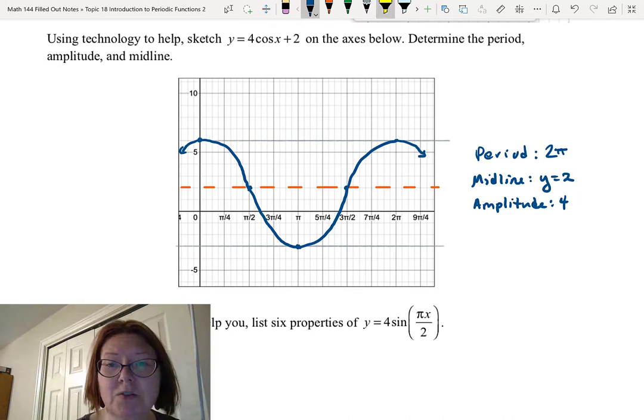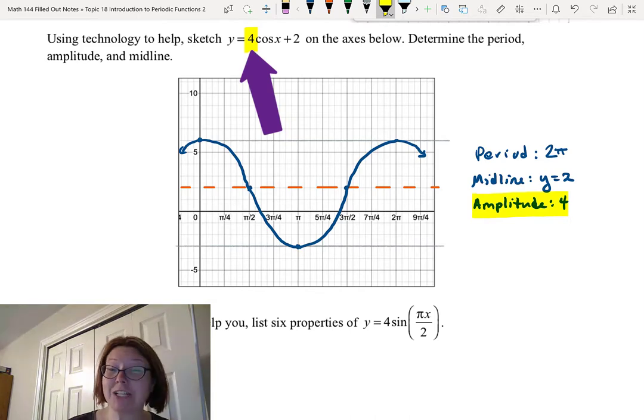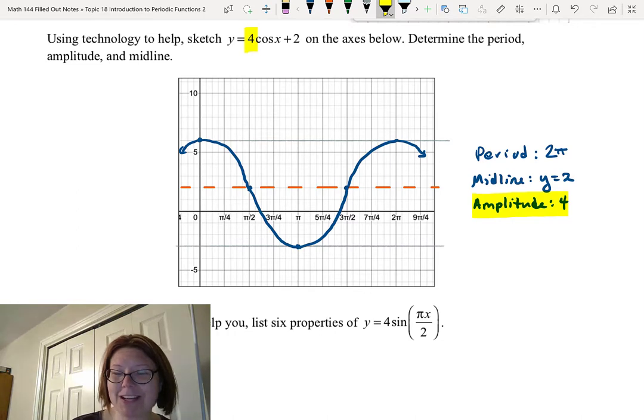And you might have started to notice a trend here. You can actually read off the amplitude as the number that's in front of the sine or cosine. That's the multiple of the sine or cosine. And we know that multiples outside the function do stretch graphs vertically, right? So it should be no big surprise that that's the amplitude.